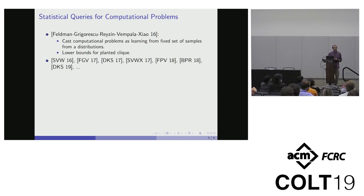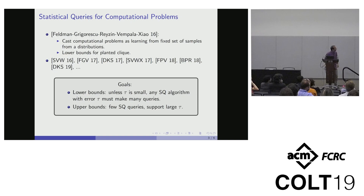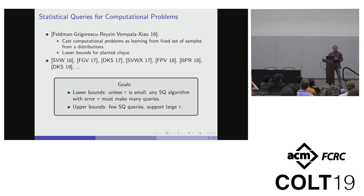Since then, there have been many works trying to show statistical query lower bounds for computational problems for which we don't have any efficient algorithms. For lower bounds, we want to say that unless the particular error we want in the statistical queries is very small, then any statistical query algorithm has to make super-polynomially many queries. For upper bounds, if we do manage to get an SQ upper bound, this is very useful because it gives a nice abstraction for implementing these algorithms, and then we can use them in various models or for robustness to noise.